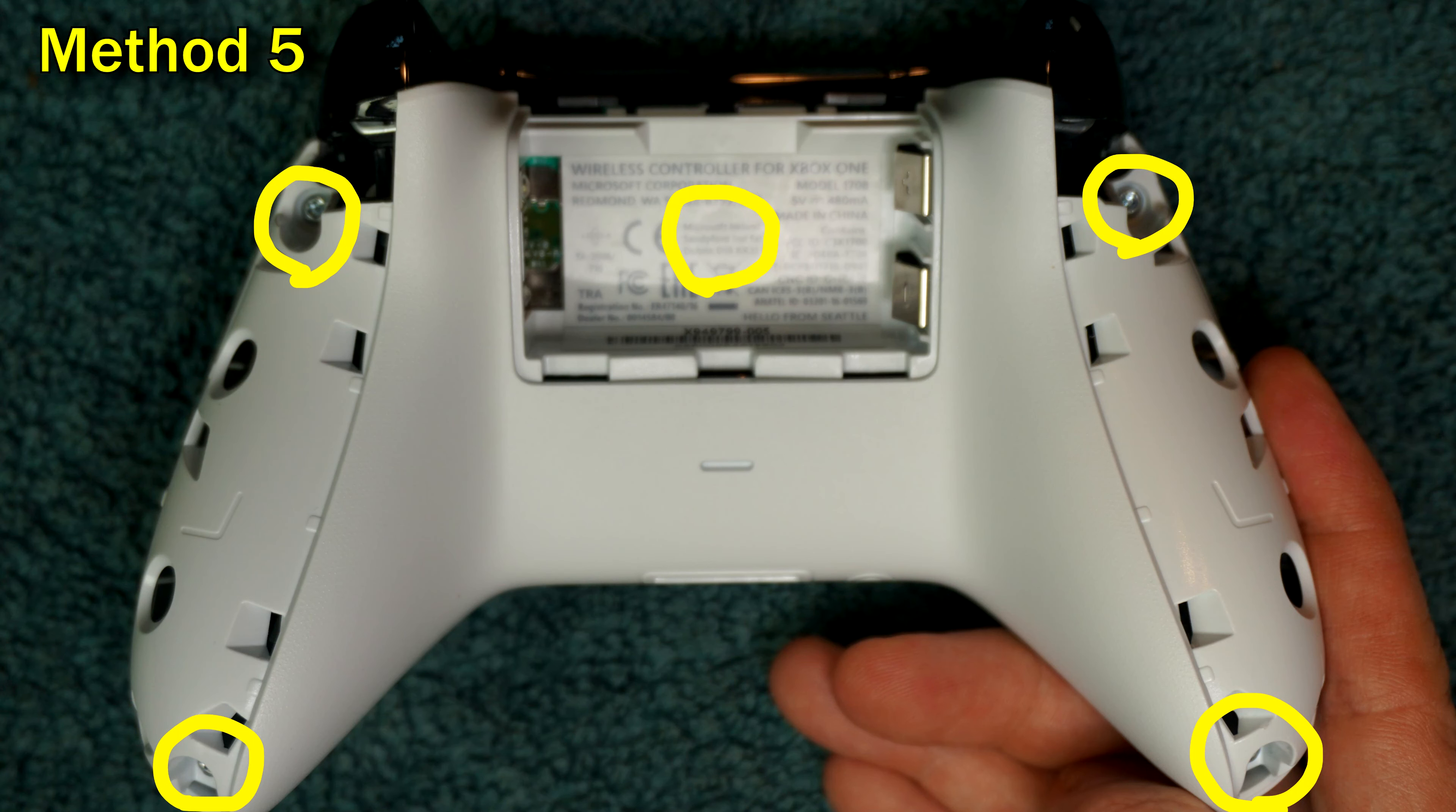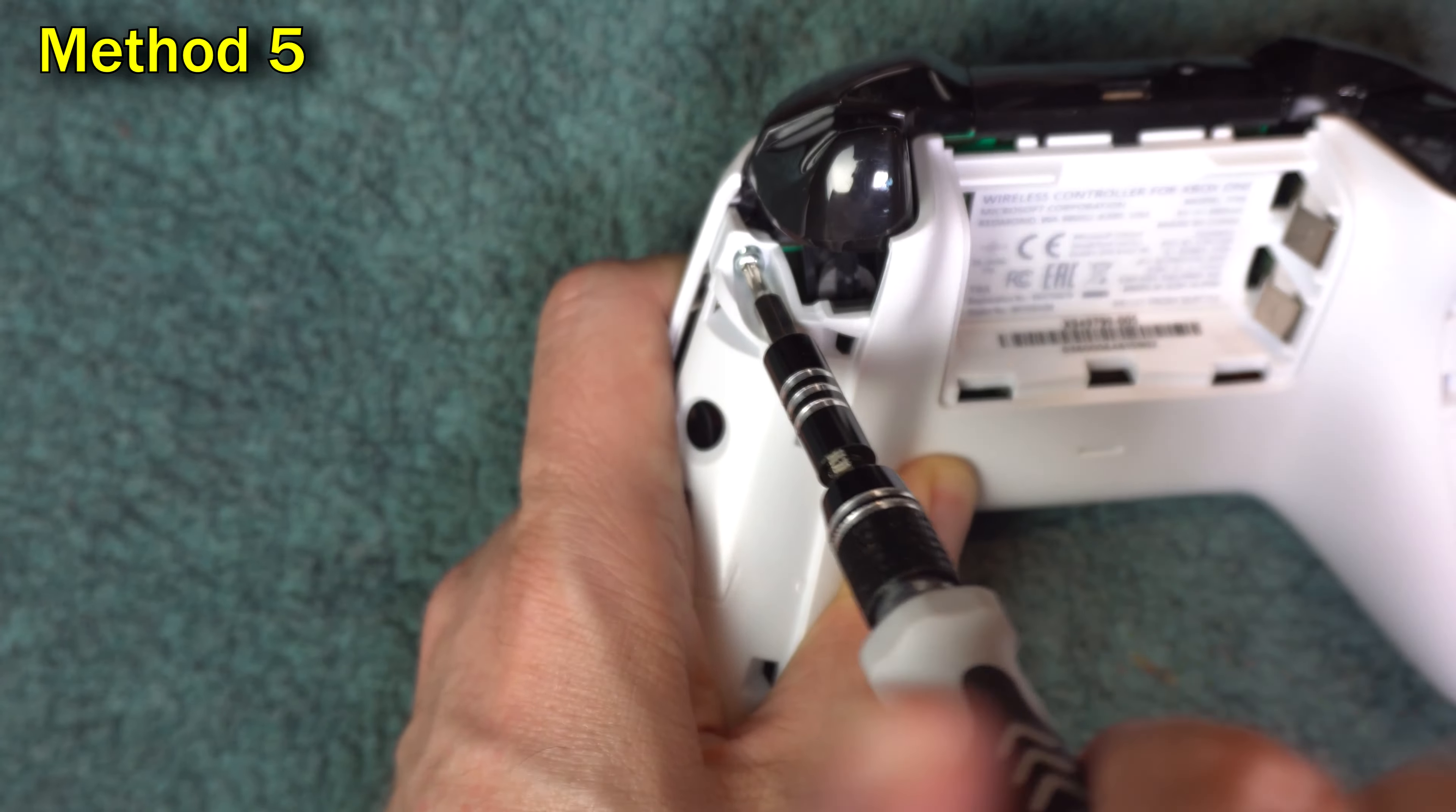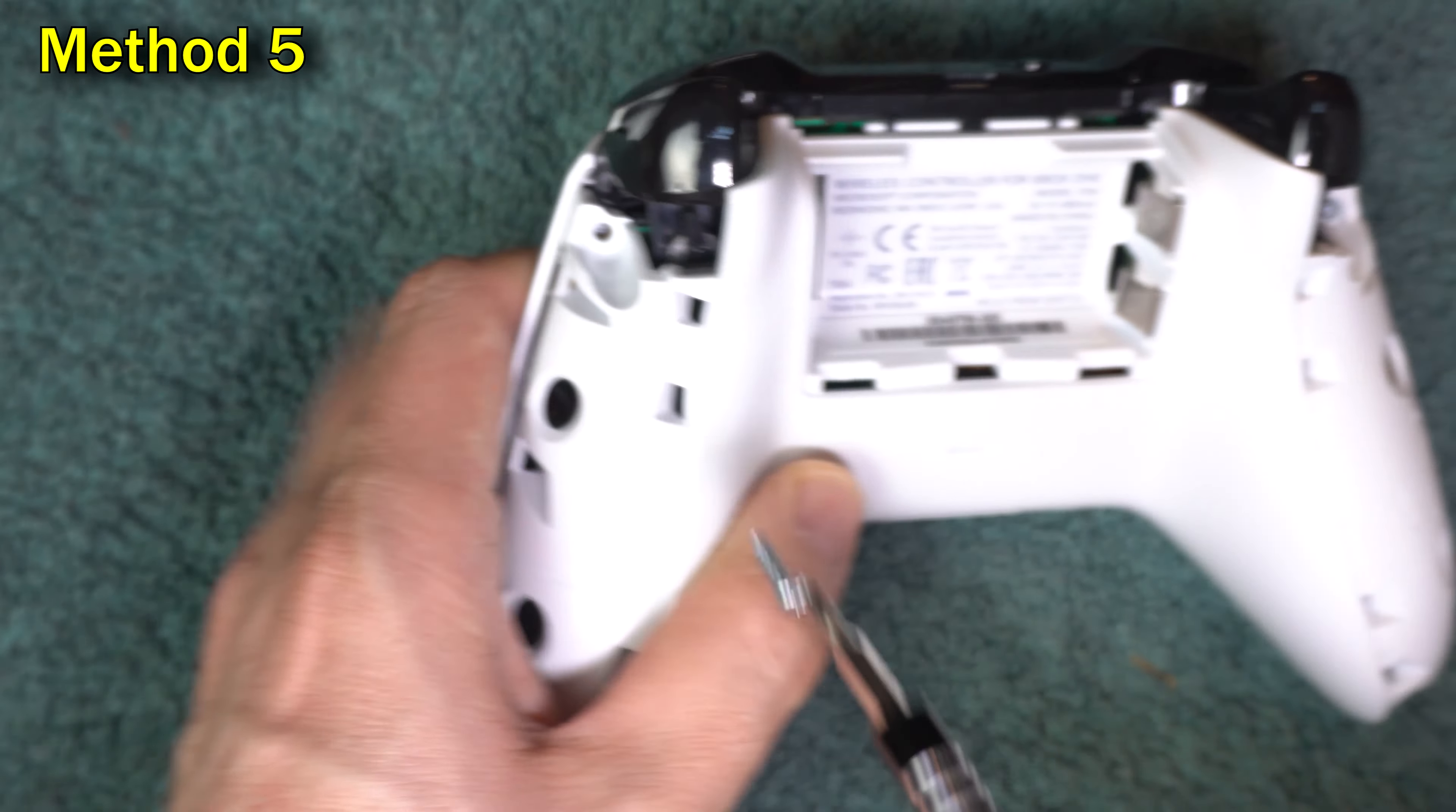If you have a screw that doesn't want to turn, try soaking it in water, cleaning it, and tapping it. Remove the top.